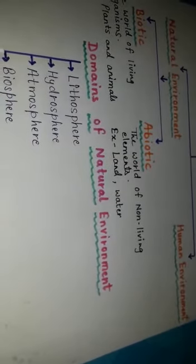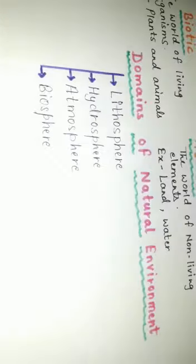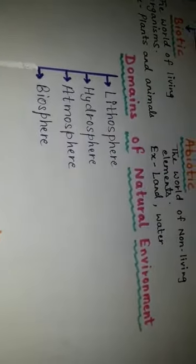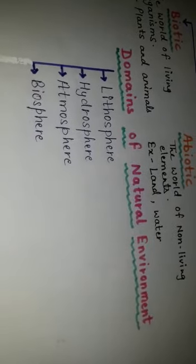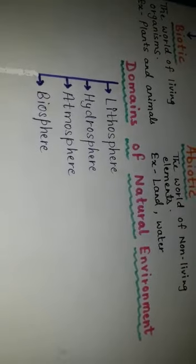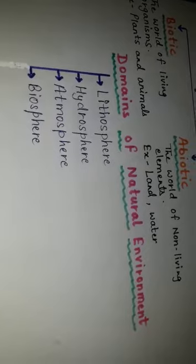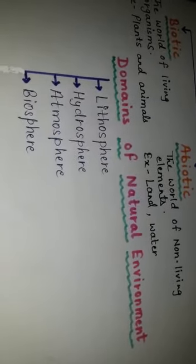I will explain the first point, lithosphere. Lithosphere is made up of rocks and minerals and is covered by a thin layer of soil. It is an irregular surface with various landforms such as mountains, plateaus, plains, and valleys.